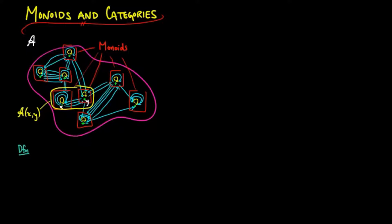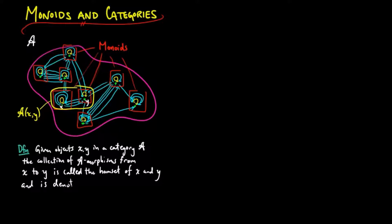We first give a more formal definition of such sets. Given objects X and Y in a category A, the collection of morphisms from X to Y is called the HOM set of X and Y, and is denoted by AXY. Note that in other places you may see HOM XY for this set, and HOM is just short for homomorphism, another term for what we call morphisms.